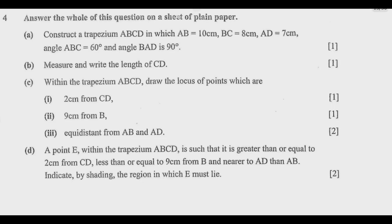Measure and write the length of CD. Within the trapezium ABCD, draw the locus of points which are: L1 — 2 cm from CD; L2 — 9 cm from B; L3 — equidistant from AB and AD.